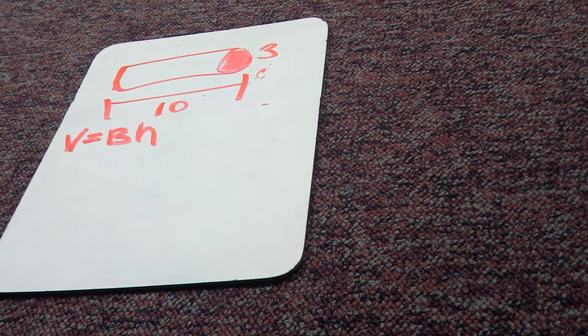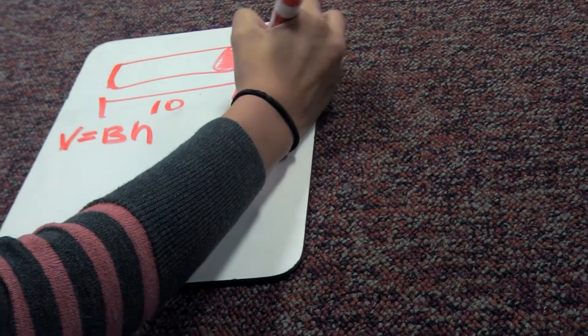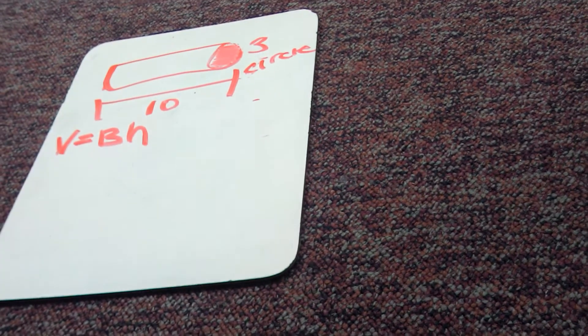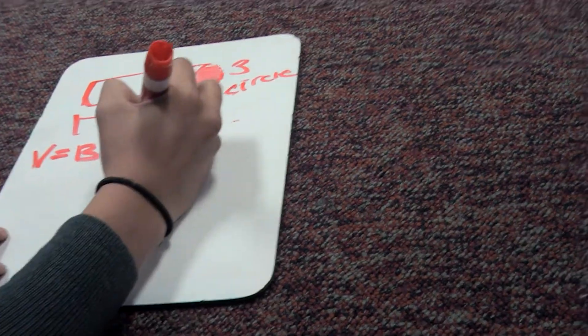Number three, what shape is it? It's a circle. Number four, what formula do you use to find the area of the circle?